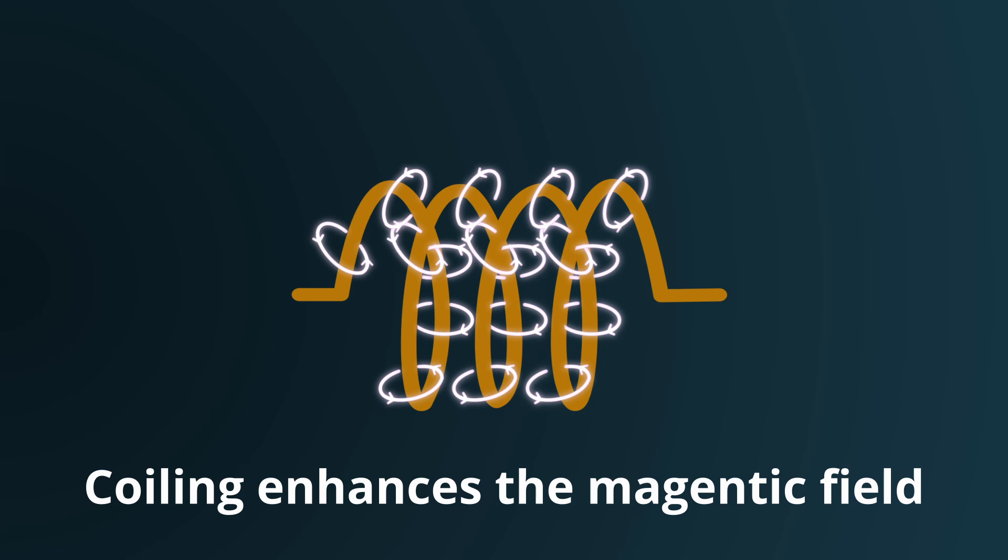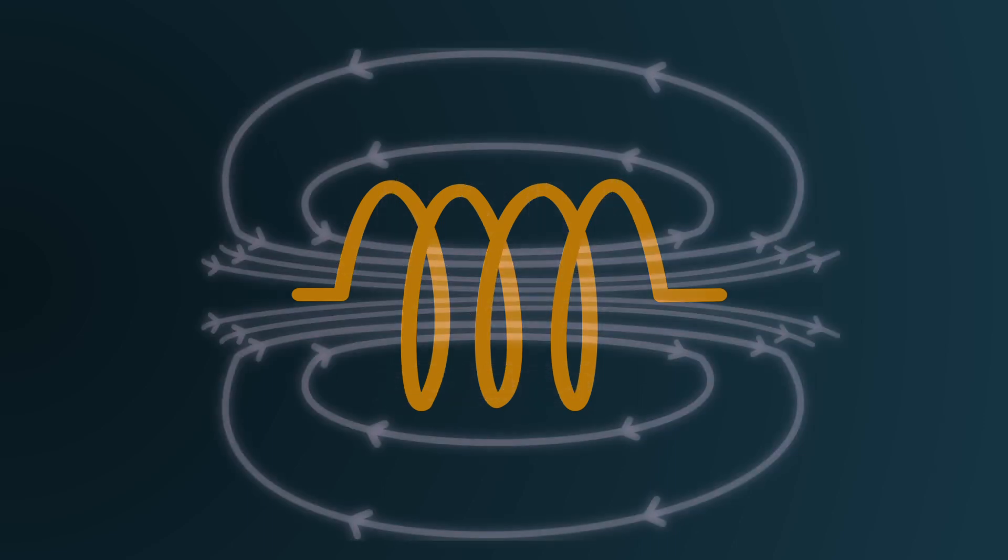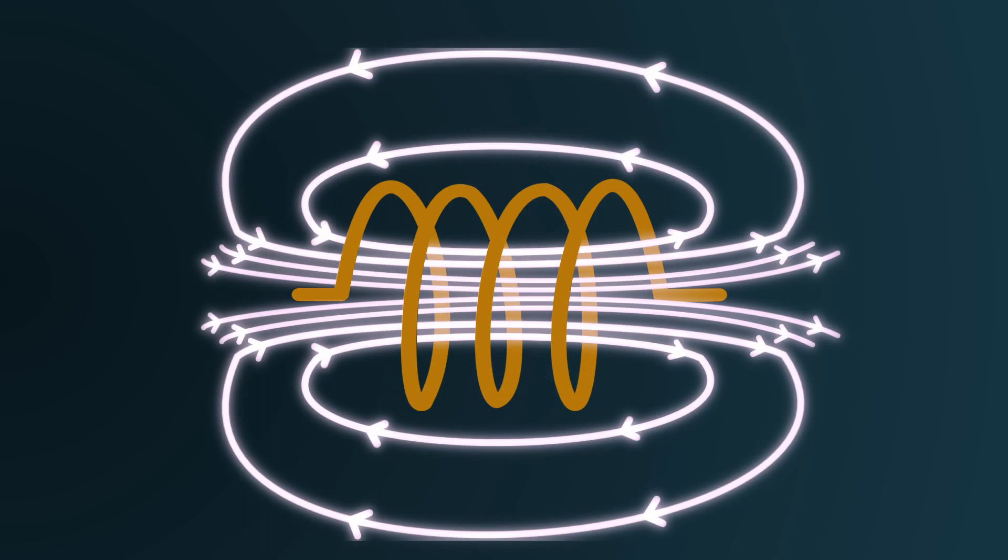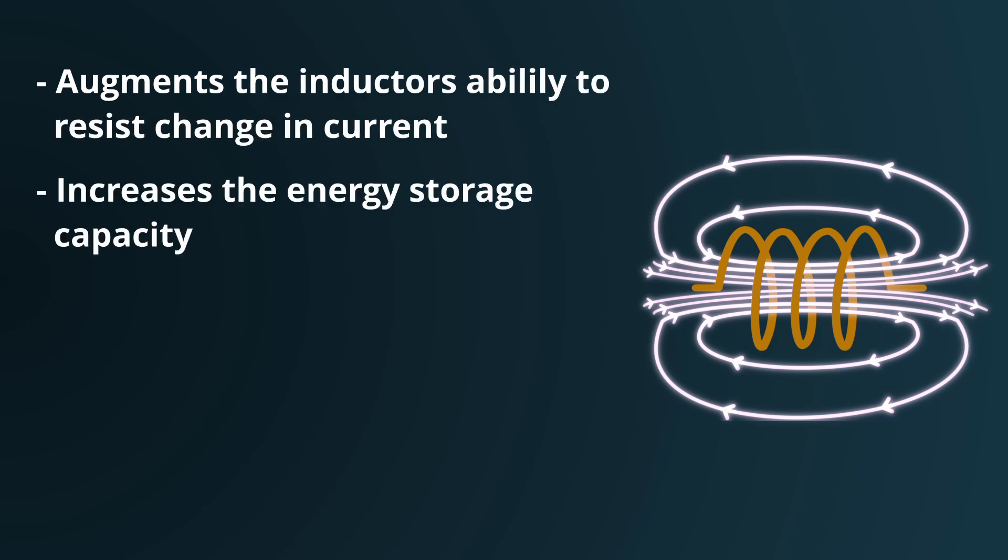Coiling the wire multiplies the magnetic field's effects. Each loop of the coil produces its own magnetic field when current flows through it. When these fields overlap and reinforce each other, the cumulative magnetic field becomes much stronger. This design not only augments the inductor's ability to oppose changes in current, but also increases its energy storage capacity.